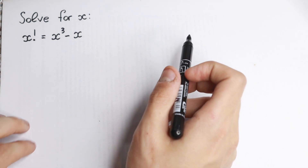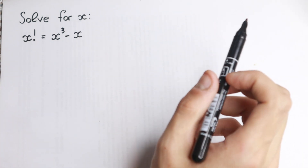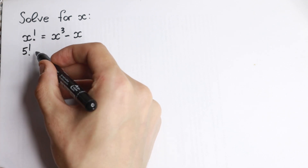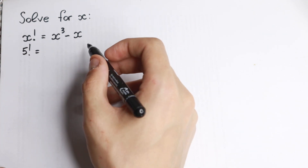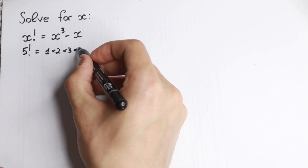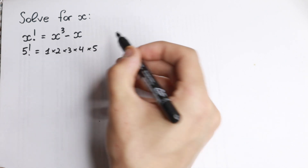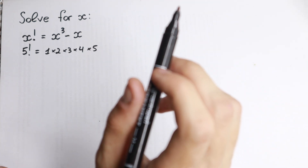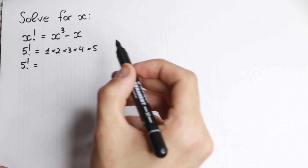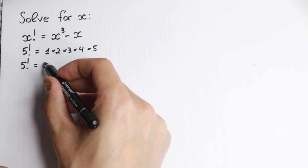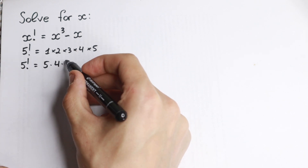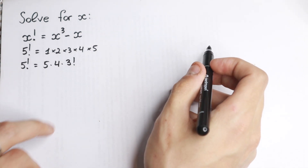How can we solve this interesting question? Let's start with an example: 5 factorial. We can write 5 factorial as 1 times 2 times 3 times 4 times 5. But we can also reorder it as 5 times 4 times 3 factorial.